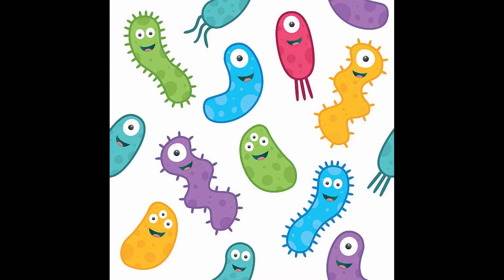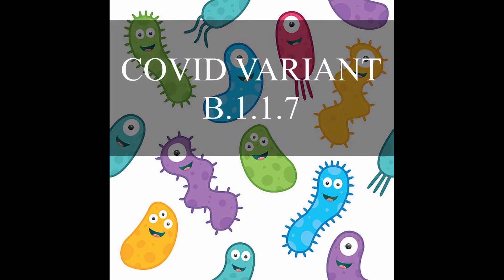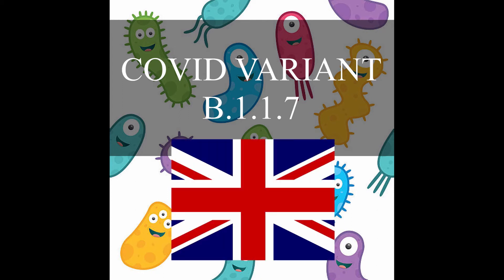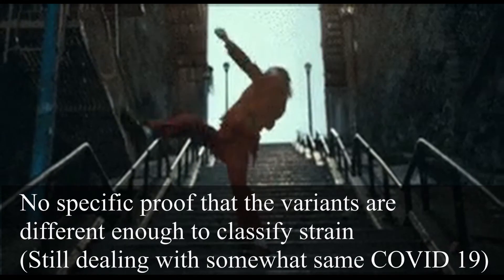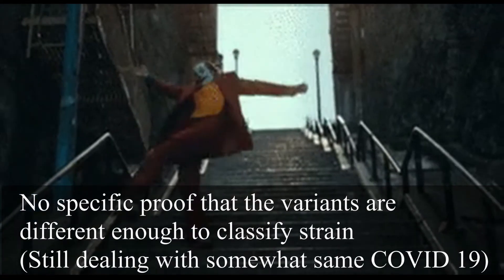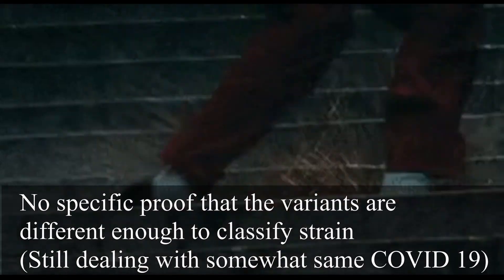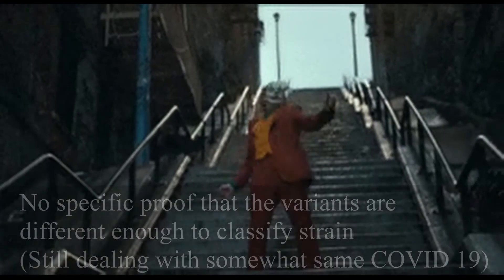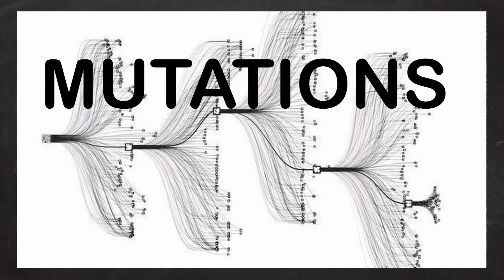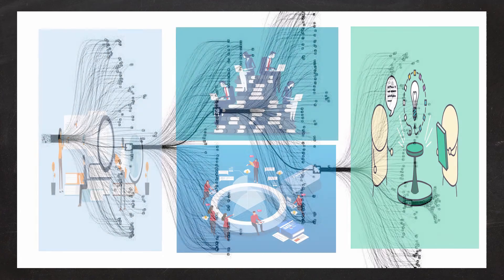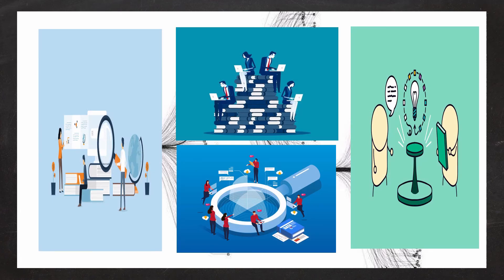Some variants can be more easily transmitted or more dangerous. This would be the case of B.1.1.7, the new COVID variant in the UK. The optimistic side is that there's no specific proof that the variants are different enough to classify as a new strain. Indeed, there are still multiple mutations occurring as we speak, thus this requires more study to clarify.